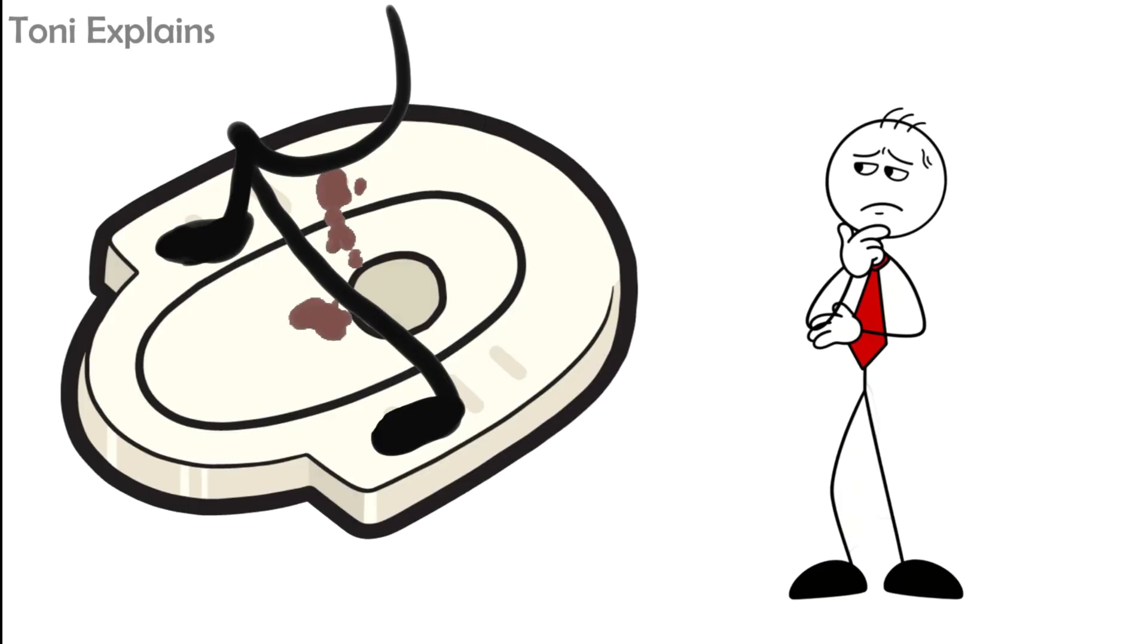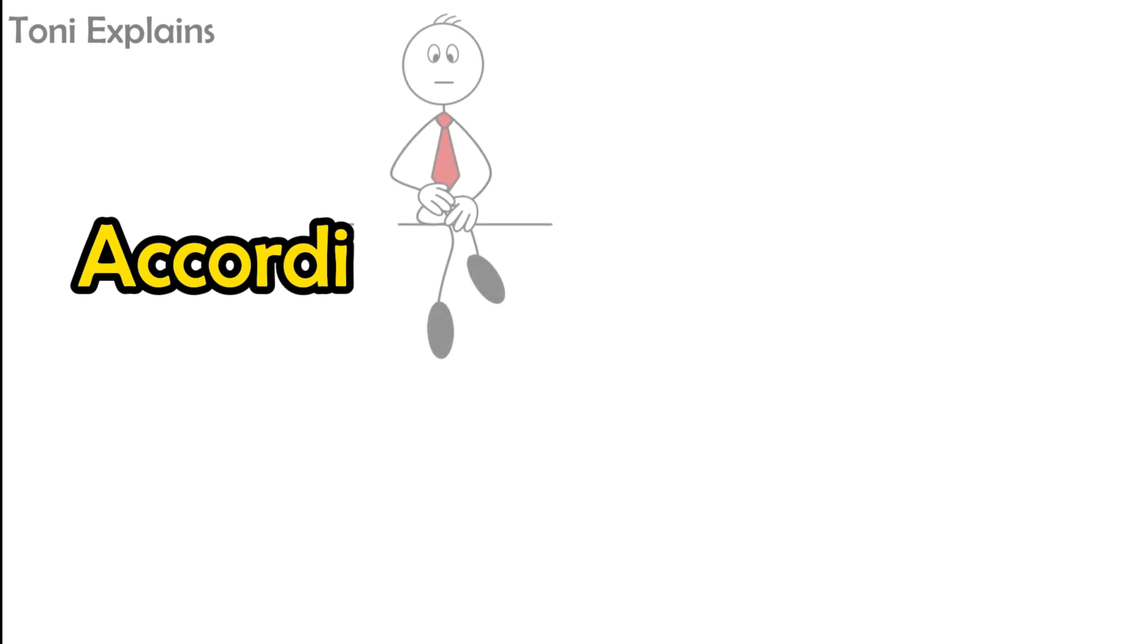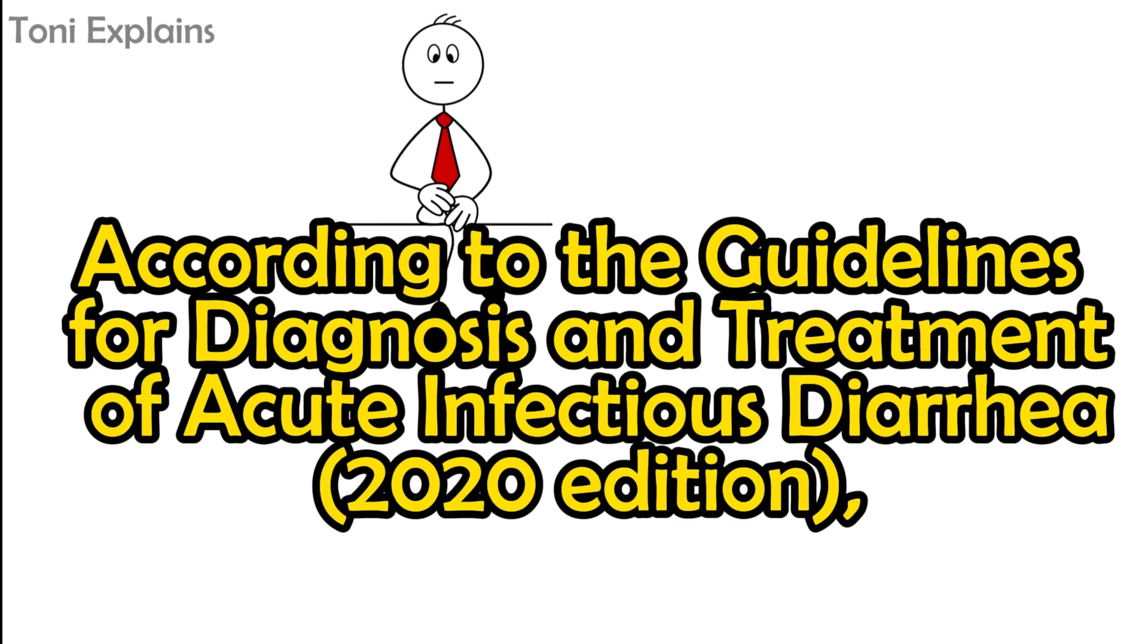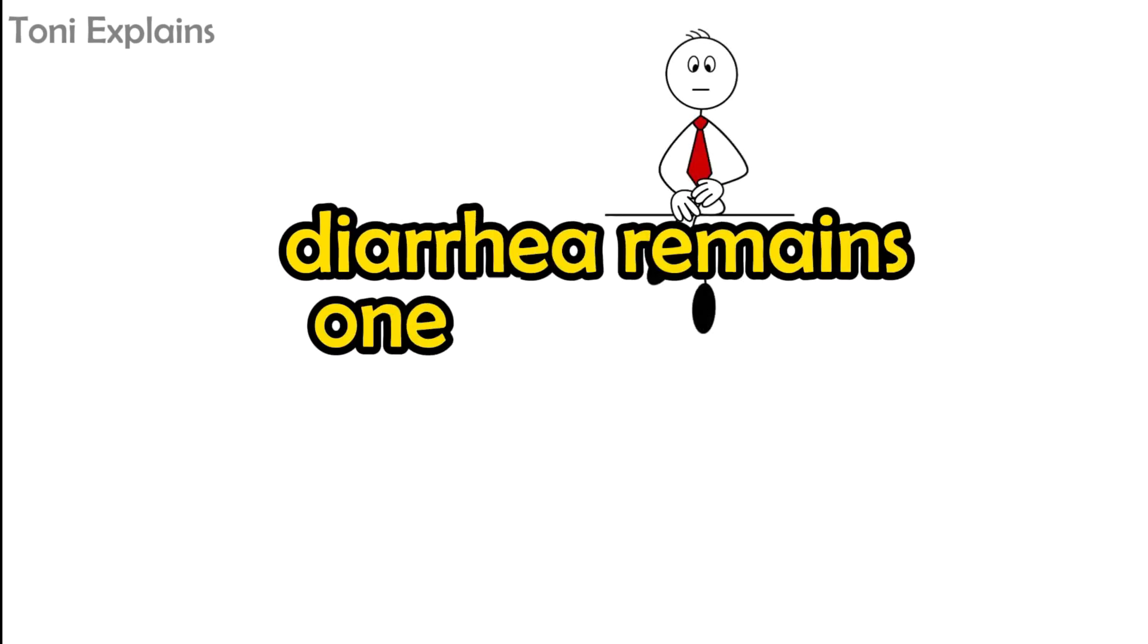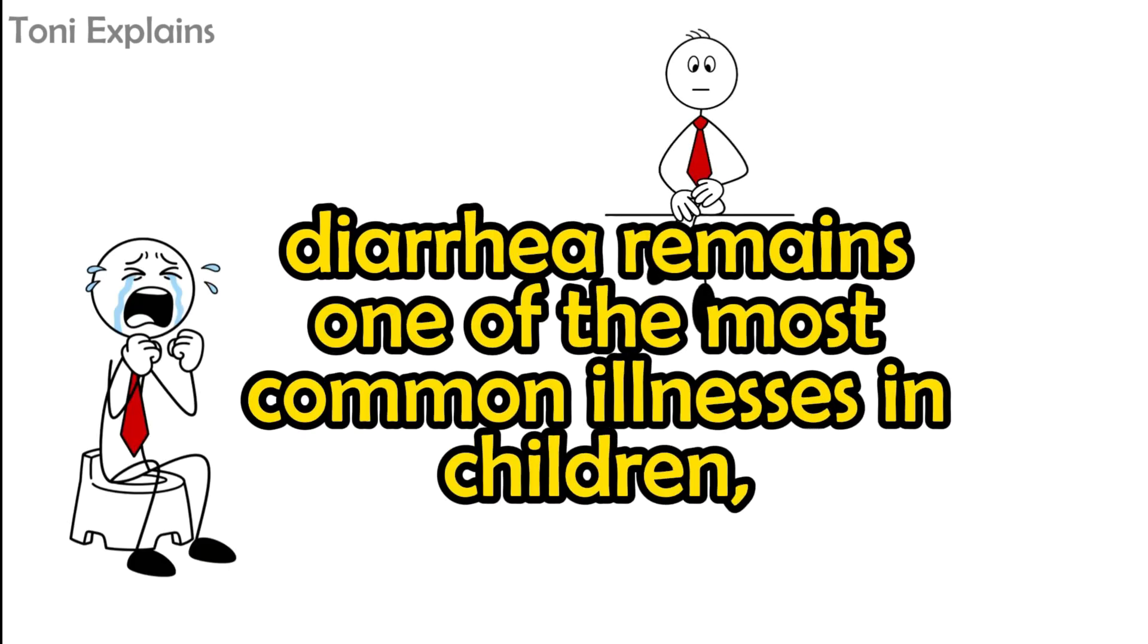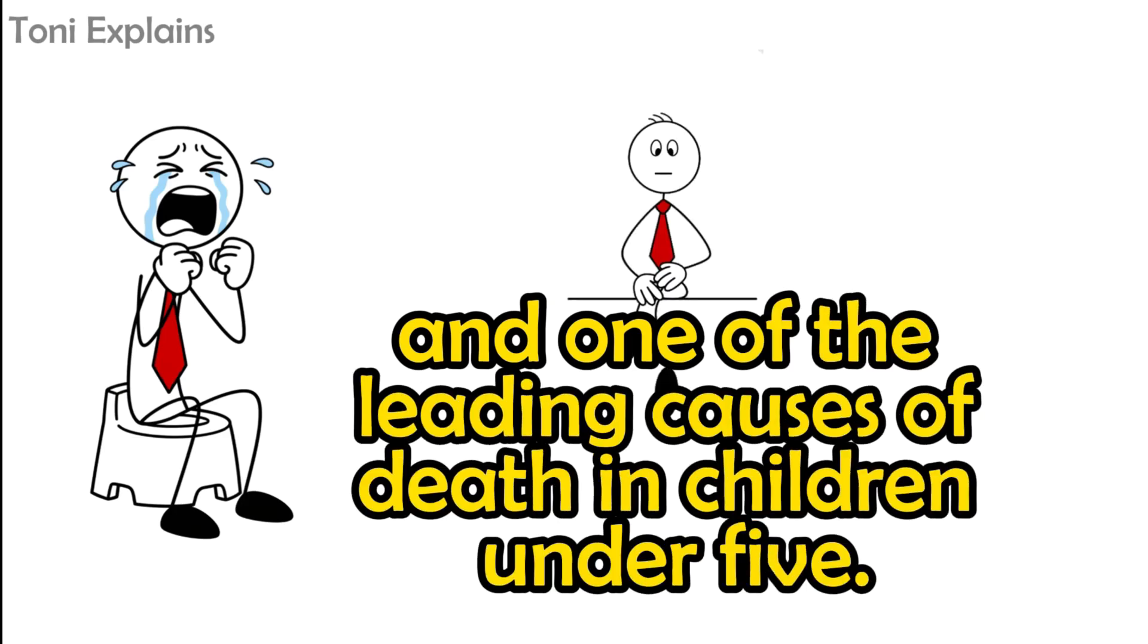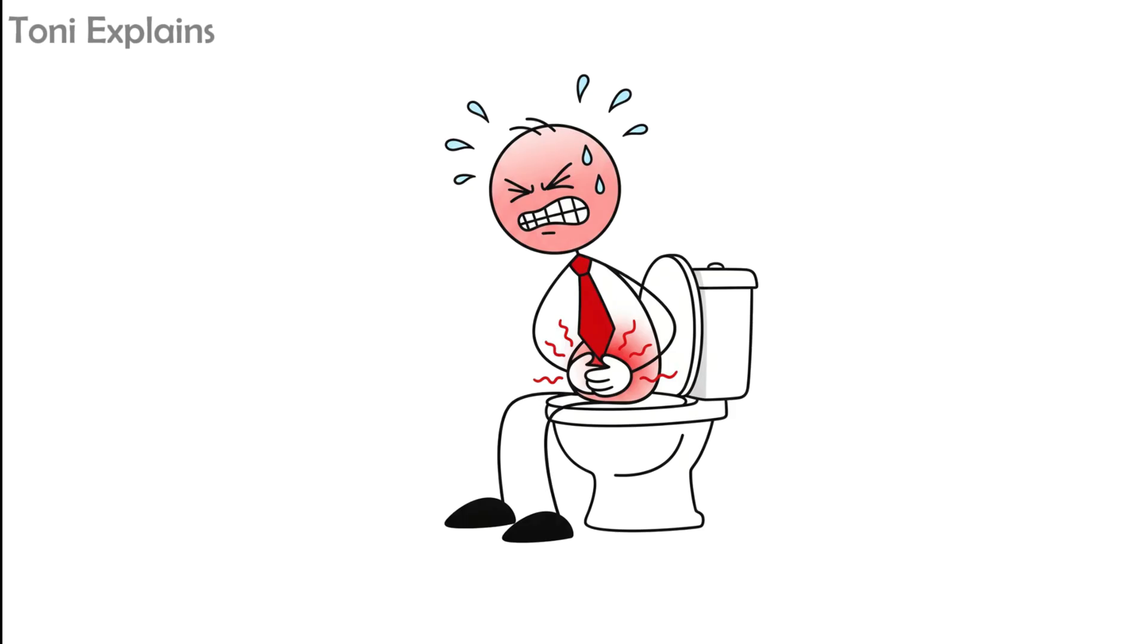However, not all diarrhea should be ignored. According to the Guidelines for Diagnosis and Treatment of Acute Infectious Diarrhea 2020 edition, diarrhea remains one of the most common illnesses in children and one of the leading causes of death in children under five. For adults, it's usually less dangerous but still serious if it lasts too long.